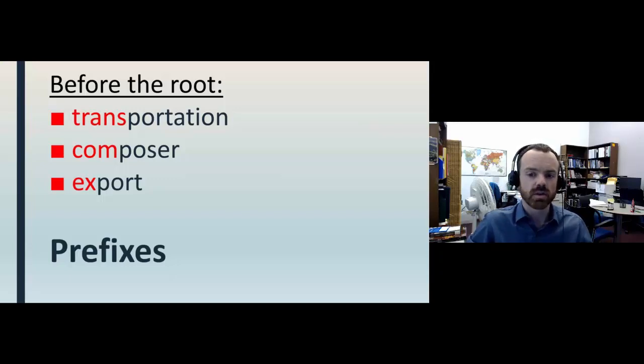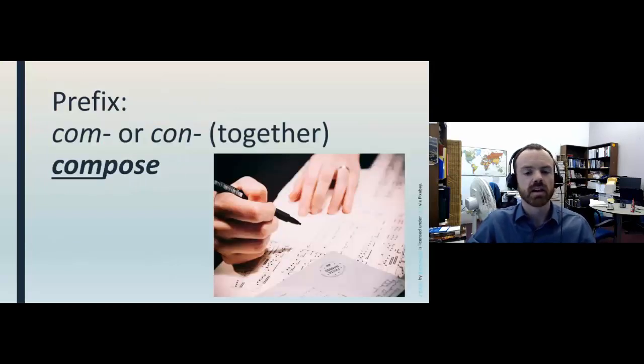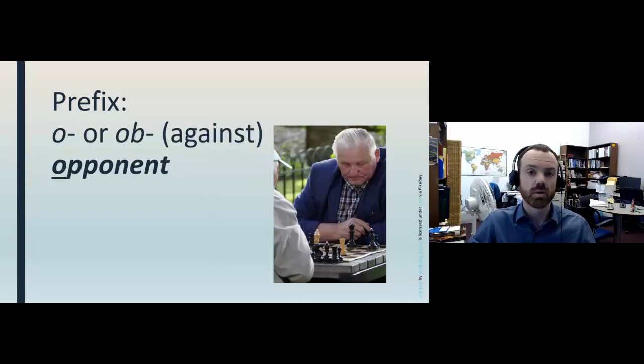Let's review some of our words, focusing on the prefixes. Com or con means together. So when we compose something, we put different parts together to make a whole. O or ob means against, so your opponent is playing against you.